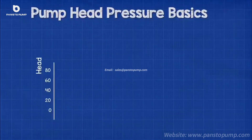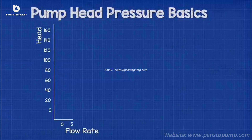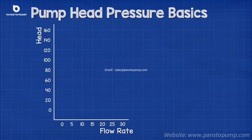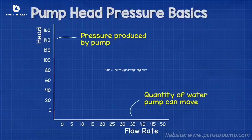The first thing we notice is that on the main vertical y-axis we have the head pressure, and on the horizontal x-axis we have the flow rate. The head is pressure, and the flow rate is how much water the pump can move.